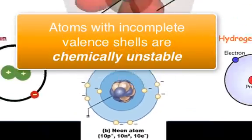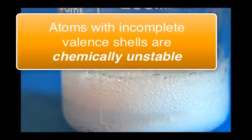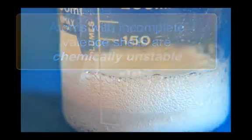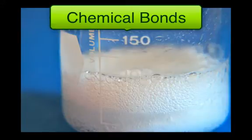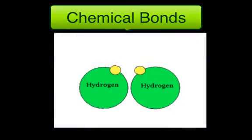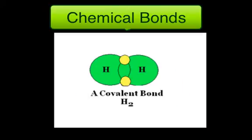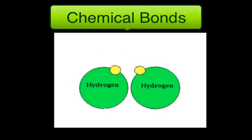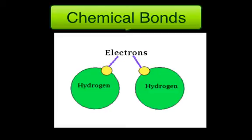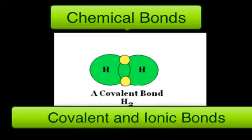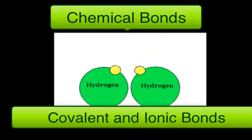Atoms with incomplete valences are chemically unstable and will interact or react with certain other elements in such a way that each atom completes its valence shell. The atoms either share or transfer electrons. This interaction causes them to stick together in what's called a chemical bond. The strongest kinds of bonds are covalent and ionic bonds.